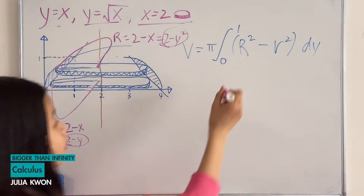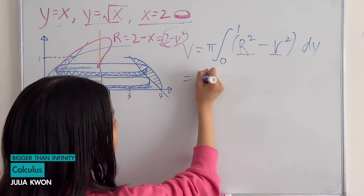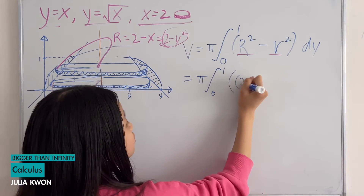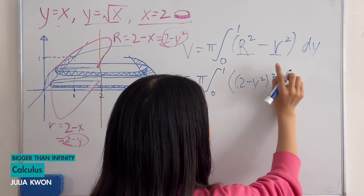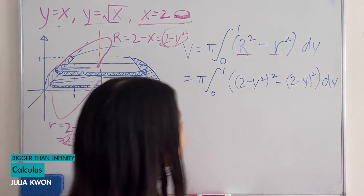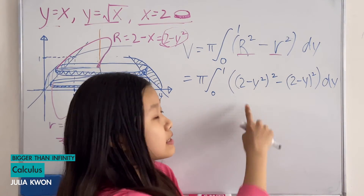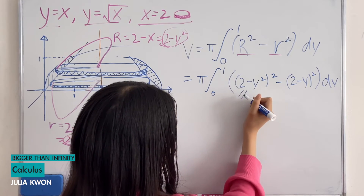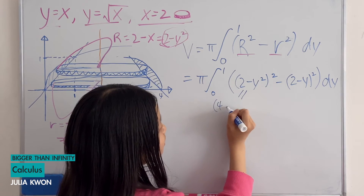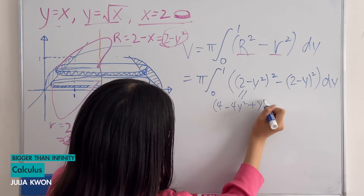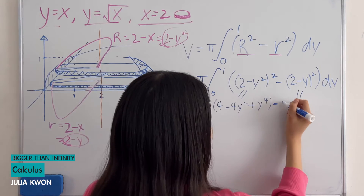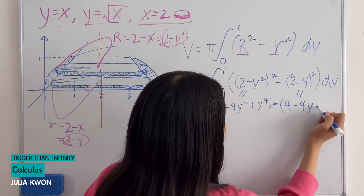Now let's substitute everything in for capital R and lowercase r. We have pi times the integral from 0 to 1 of capital R squared, which is (2 minus y squared) squared, minus lowercase r squared, which is (2 minus y) squared, dy. Expanding: (2 minus y squared) squared equals 4 minus 4y squared plus y to the 4th, and (2 minus y) squared equals 4 minus 4y plus y squared.